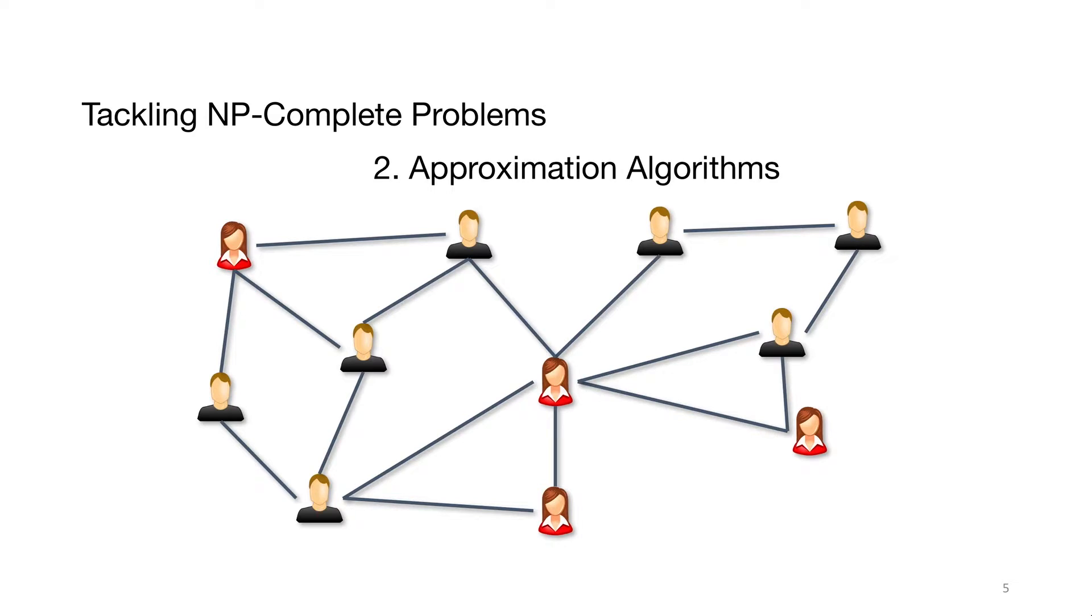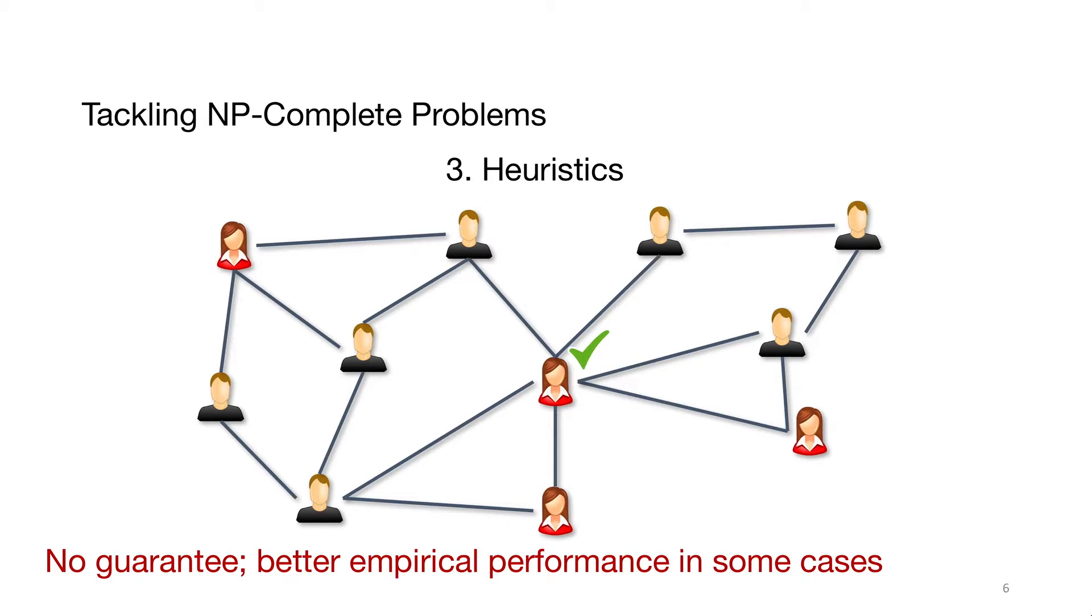The approximation algorithm has worst-case guarantee, but empirically it performs poorly. Heuristics like picking the node with the largest degree only work in some cases.